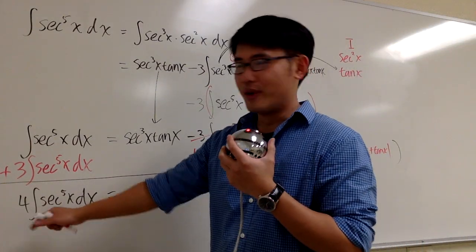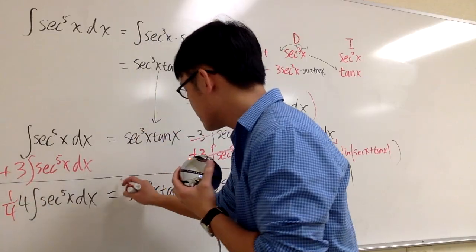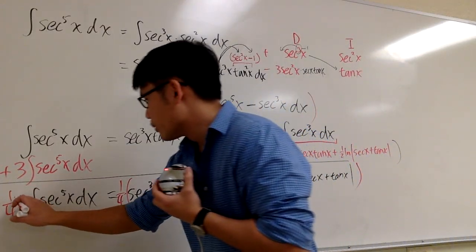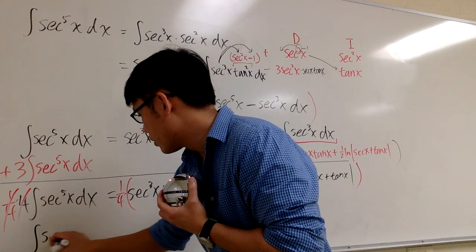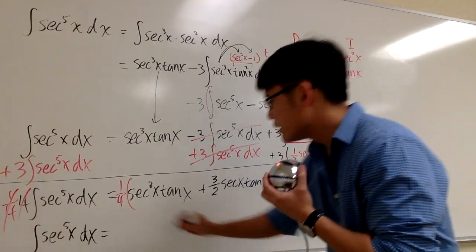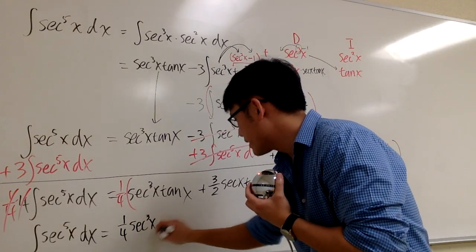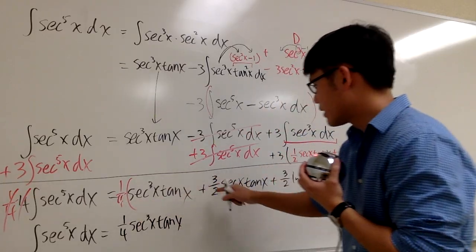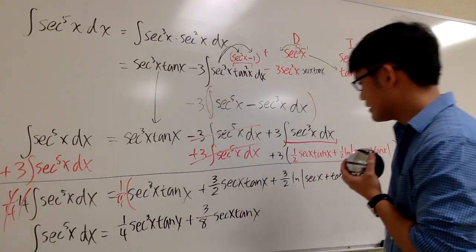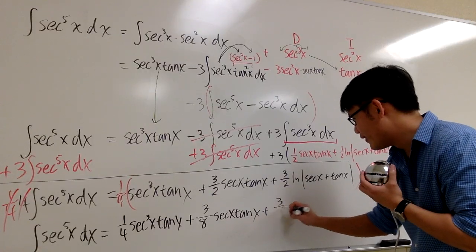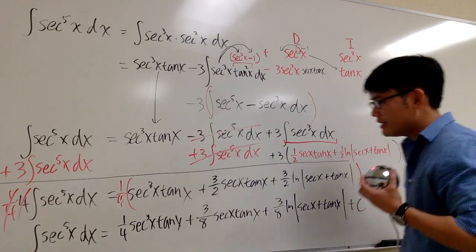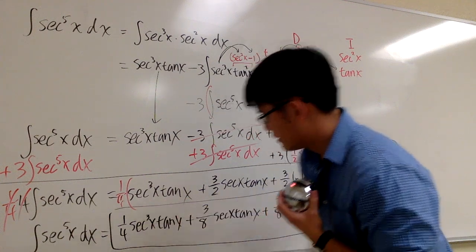We don't like the 4, so let's multiply both sides by one quarter. Distributing one quarter into the parentheses, the final answer is: the integral of secant to the fifth power x dx equals one quarter secant to the third power x times tangent x, plus 3 over 8 secant x times tangent x, plus 3 over 8 ln of the absolute value of secant x plus tangent x, plus C.